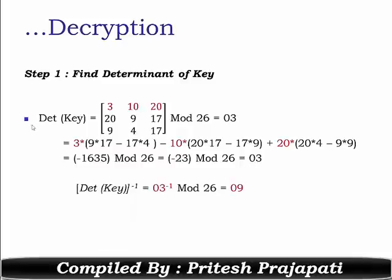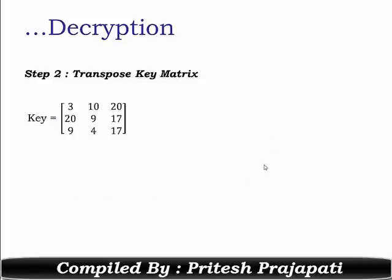The determinant of the key is 3. Now we need to find the inverse of 3 in mod 26. Using the extended Euclidean algorithm for multiplicative inverse, you get 3 inverse in mod 26 equal to 9.